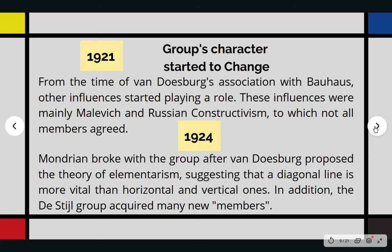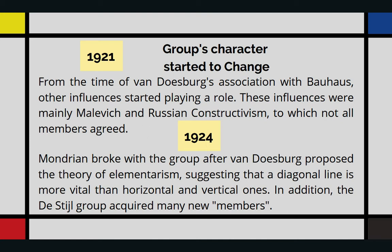In continuation — in 1921, the group's character started to change. From the time of Van Doesburg's association with the Bauhaus, other influences started playing a role. These influences were mainly Malevich and Russian Constructivism, to which not all members agreed. As you know, the Bauhaus is a German art school that combines crafts and fine arts. This was the reason for countless arguments and debates within the group, which led to Mondrian breaking with the group in 1924 after Van Doesburg proposed the theory of Elementarism, suggesting that a diagonal line is more vital than horizontal and vertical ones.